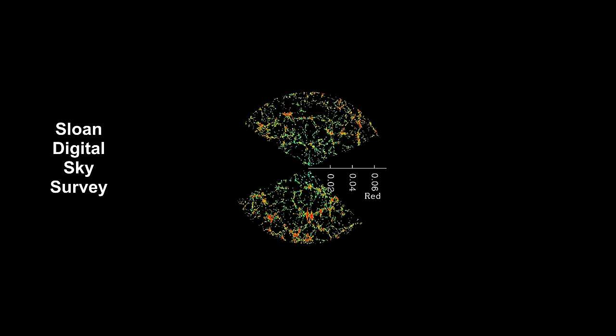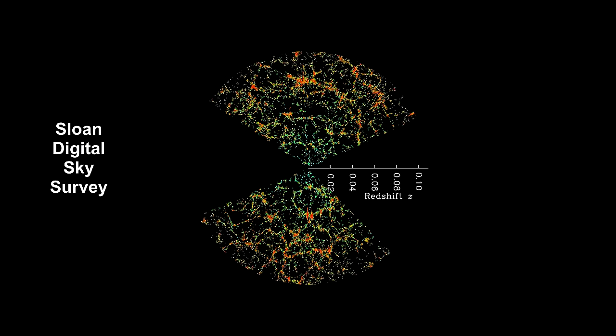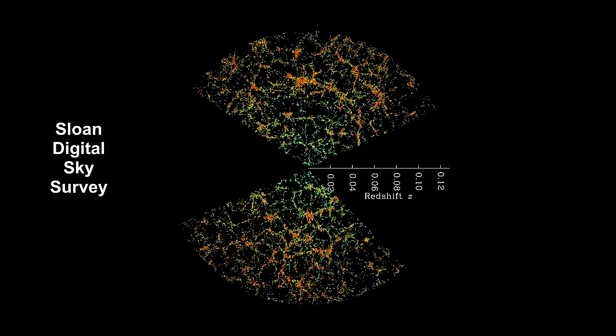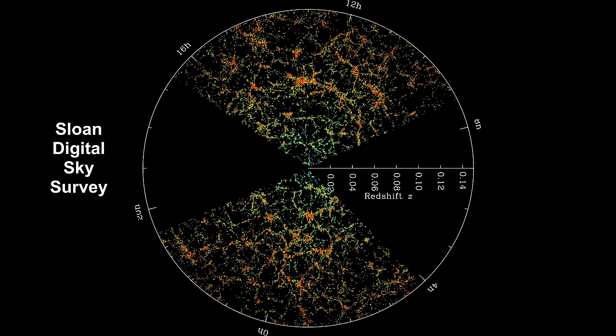Between 2000 and 2008, the Sloan Digital Sky Survey conducted one of the most ambitious and influential surveys in the history of cosmology. Over eight years of operations, it obtained deep, multi-color images covering more than a quarter of the sky and created a three-dimensional map containing more than one million galaxies. These are the color-enhanced slices through the survey's three-dimensional map of the distribution of galaxies. Earth is at the center, and each point represents a galaxy. Galaxies are colored according to the age of their stars, with the redder, more strongly clustered points showing galaxies made of older stars. The outer circle is at a distance of two billion light-years. The region between the wedges was not mapped by the survey because dust in our own galaxy obscures the view of the distant universe in these directions.